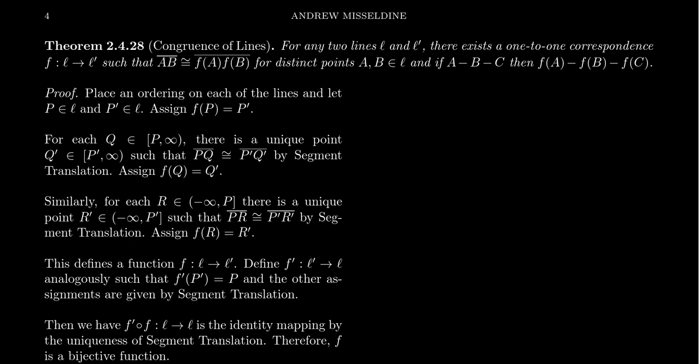Suppose we have two distinct lines L and L prime in a congruence geometry — meaning we have the four axioms of incidence, the four axioms of betweenness, and the six axioms of congruence. Given these two lines L and L prime, there exists a one-to-one correspondence, a.k.a. a bijection, which we call F going from L to L prime. Think of this as a function between the points of L and L prime, since in an incidence geometry the points incident to a line characterize the line.